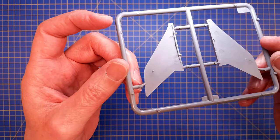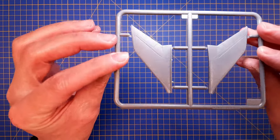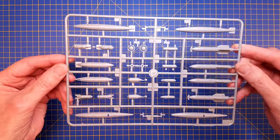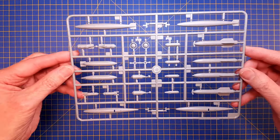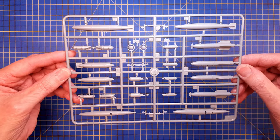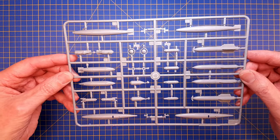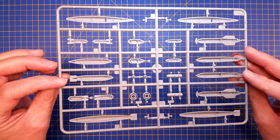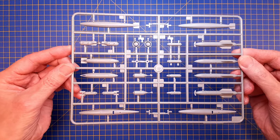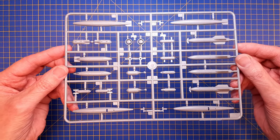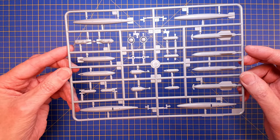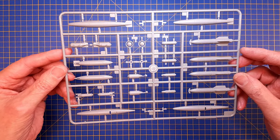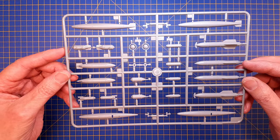We have one sprue with all the stores or weapons and drop tanks. There are the torpedoes and also rockets, I think.